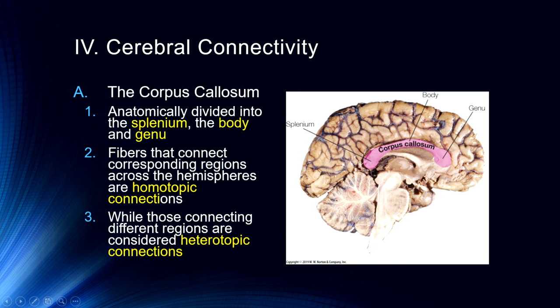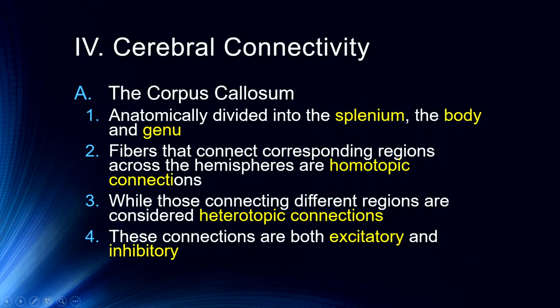So a homotopic connection from the occipital lobe would travel to the opposite hemisphere at the same region, whereas a heterotopic one might connect, say, the right occipital lobe to the left frontal lobe. These connections are importantly both excitatory and inhibitory — there's information exchange across the hemispheres that includes both excitation and inhibition. So the left hemisphere might be quieting the right hemisphere while it's trying to do something, or if it's more dominant in a task, part of that dominance might be due to that inhibitory connection traveling across the corpus callosum.